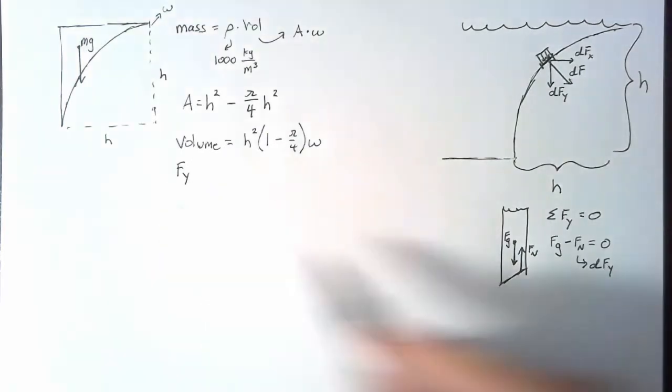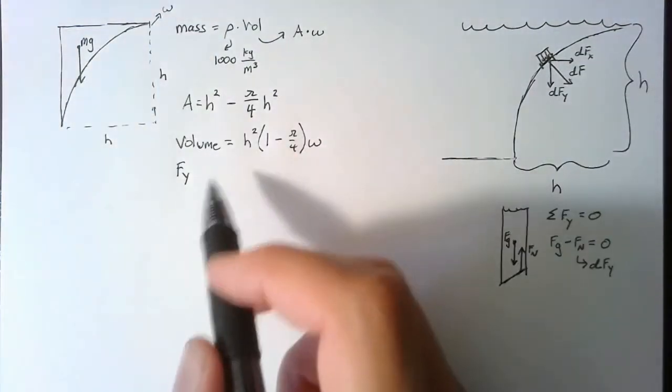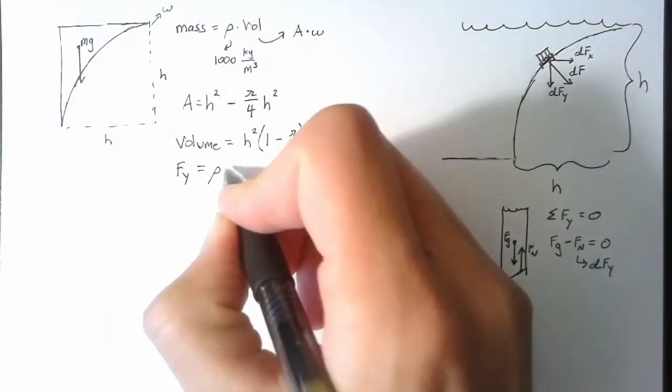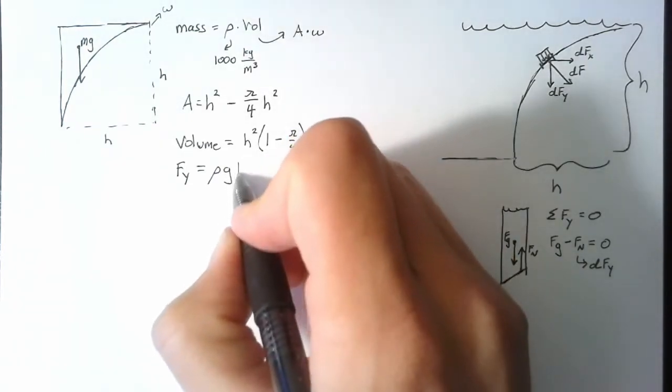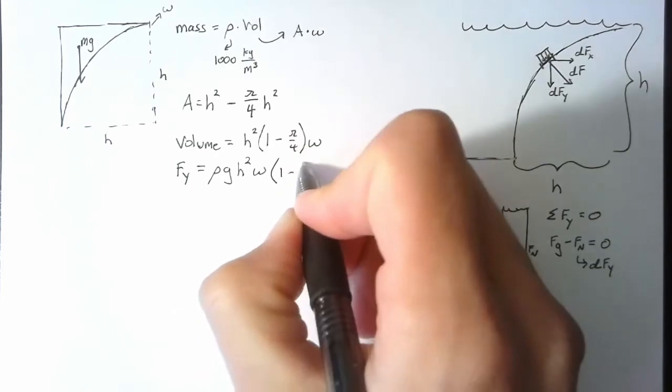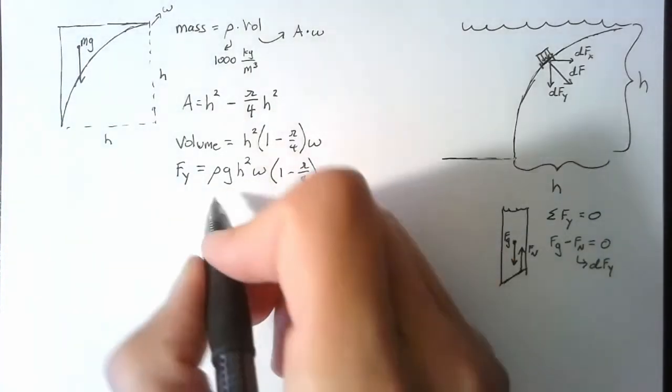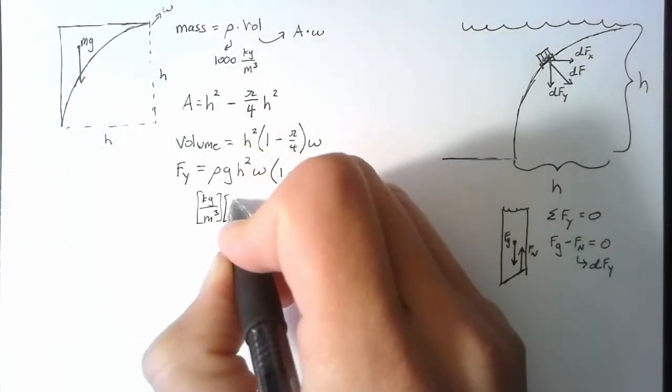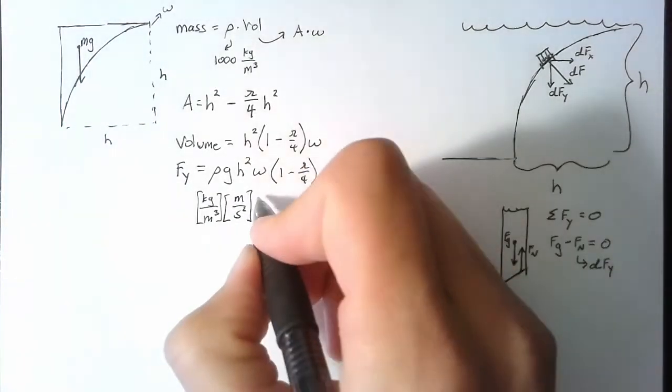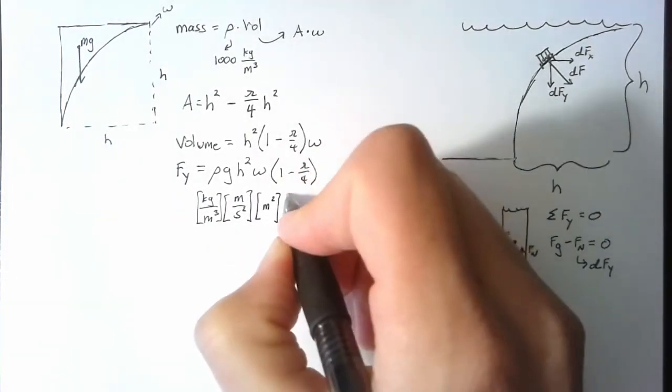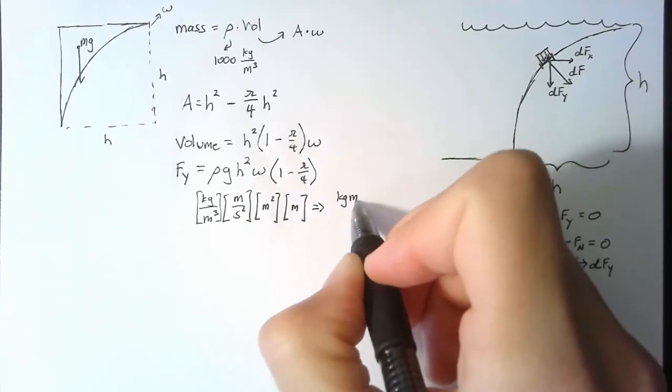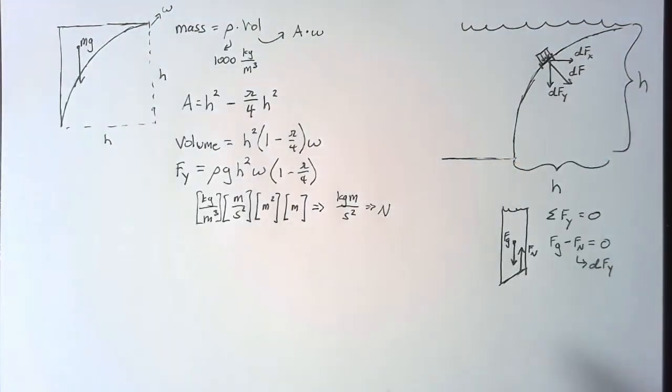Our force in the y direction, so this force pushing down over the entire thing, is just going to be our mass multiplied by gravity. So mass is rho times volume. So we end up with rho g times our volume here, which is h squared w, 1 minus pi over 4. I'm going to take a quick moment to look at all the units here. So rho is in kilograms per meter cubed, g is in meter per second squared, h is in meters, so this is meters squared, and w is in meters. These three meters cancel out with these three, and we're left with kilogram meter per second squared, or a newton. This is good. We have units of newtons for force.